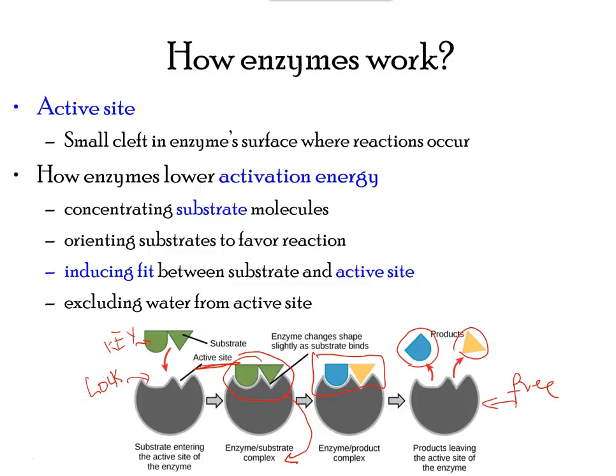Enzymes lower activation energy and depend on the amount of substrate molecule — this amount is always small. Increasing enzyme concentration in the reaction does not speed up the reaction. The correct substrate is another critical requirement for a favorable reaction. Each substrate has its own enzyme. In most enzymatic reactions, water is released as a byproduct.